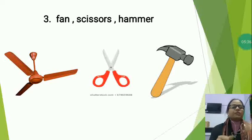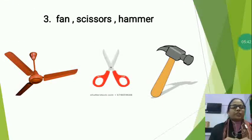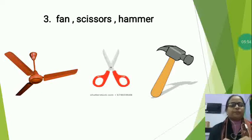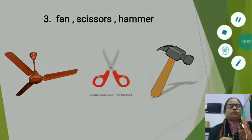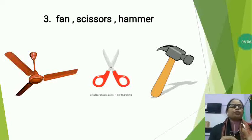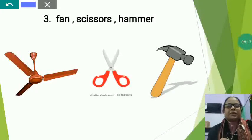We use fan to get air. Scissors are a tool that we use in our day-to-day life to cut paper, to cut clothes, and to give a perfect shape and size. We use hammer to fix a nail in a wall and we do many things with the help of hammer — this is also a tool. So tell me which one is different? Scissors and hammer are both tools but fan is a gadget. So we will circle fan.